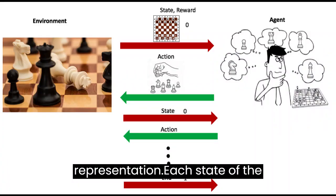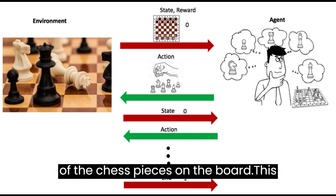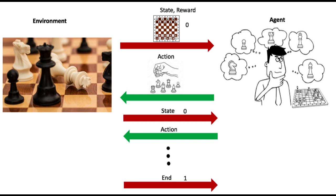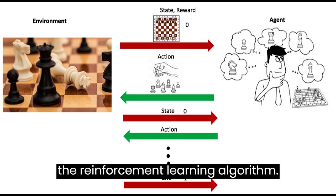Each state of the game can be represented by the positions of the chess pieces on the board. This state representation serves as input to the reinforcement learning algorithm.